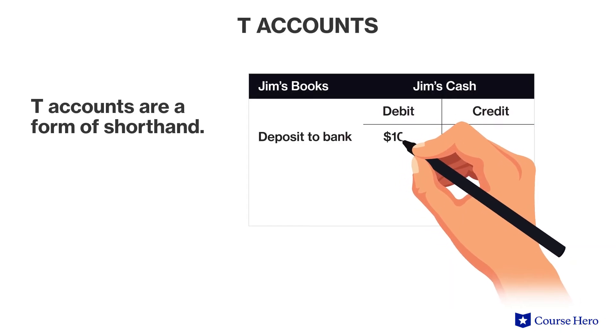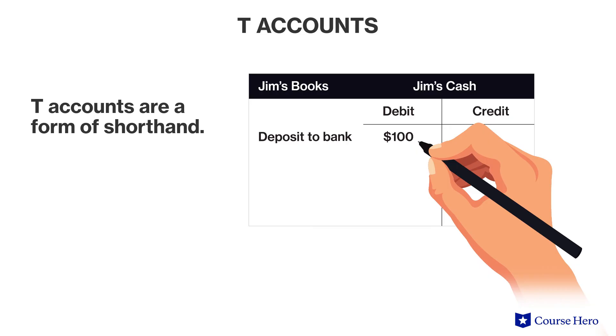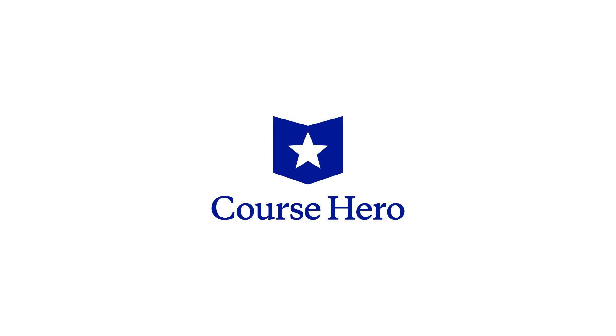T-accounts are a form of shorthand that accountants can scribble on a piece of paper before they make an actual entry to the accounting books. The impact of a debit or credit, and whether a debit indicates a decrease or increase in a particular T-account, depends on the type of account. For example, in asset accounts such as cash or accounts receivable, a debit indicates an increase while a credit indicates a decrease. The opposite is true for a revenue account, where debits indicate a decrease and credits indicate an increase.